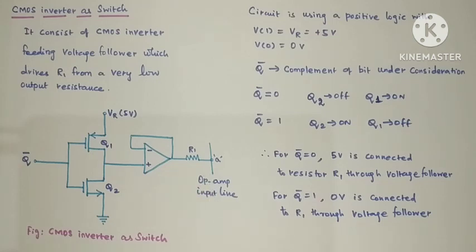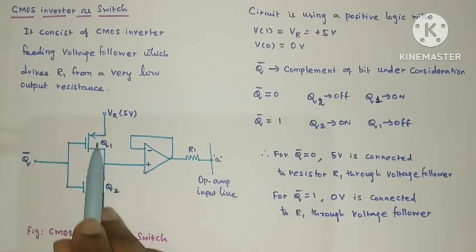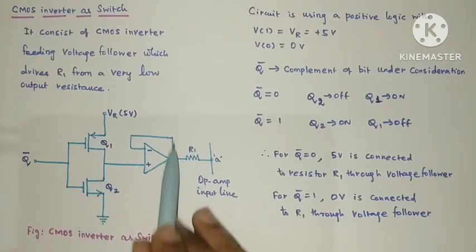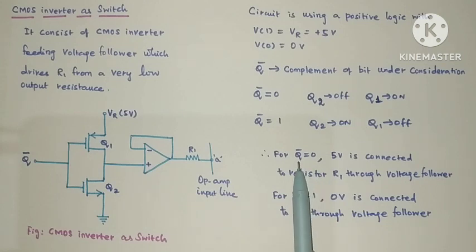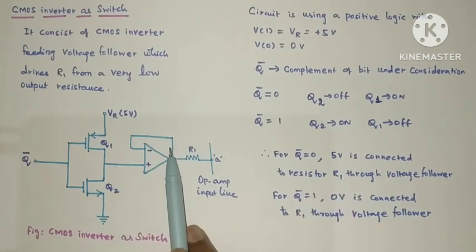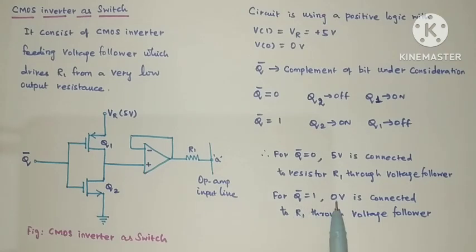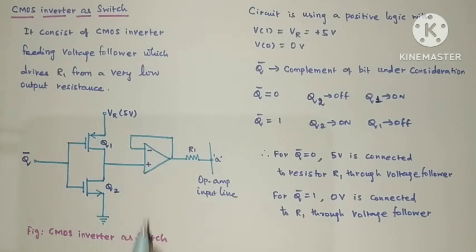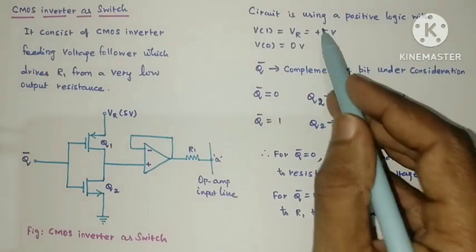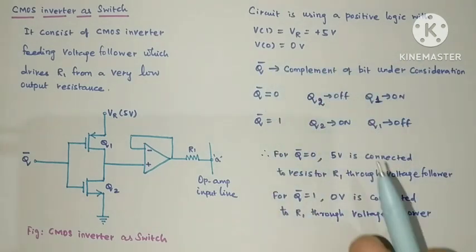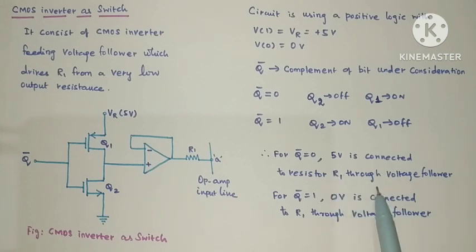Now consider the other case: if the input bit is 0, then Q-bar will be 1. When Q-bar equals 1, NMOS (Q1) becomes OFF and Q2 becomes ON, so ground potential gets connected to R1 through the voltage follower circuit. In summary: for Q-bar equal to 0 (input bit is 1), 5 volt is connected to resistor R1 through the voltage follower. For Q-bar equal to 1 (input bit is 0), 0 volt is connected to R1 through the voltage follower. Just draw the diagram, note it has a CMOS inverter and voltage follower, assume positive logic where logic 1 is plus 5 volt and logic 0 is 0 volt, and for each input bit define which output is available.